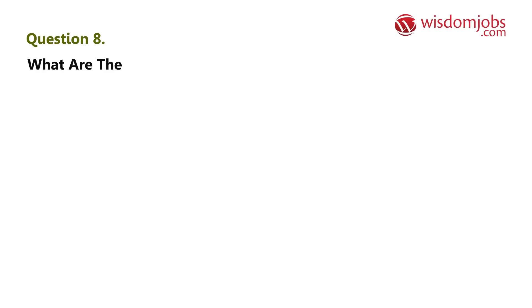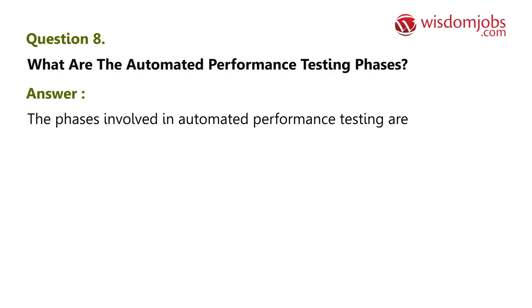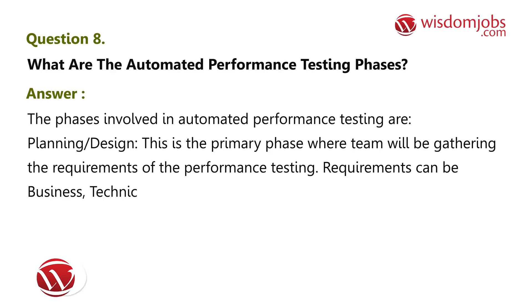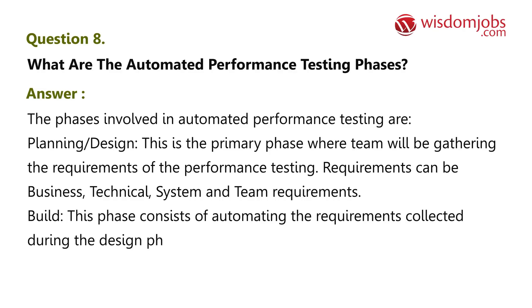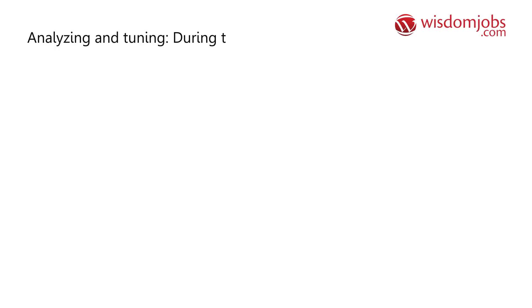Question 8: What are the automated performance testing phases? Answer: The phases involved in automated performance testing are: Planning and Design — the primary phase where the team gathers requirements for performance testing, which can be business, technical, system, and team requirements. Build — this phase consists of automating the requirements collected during the design phase. Execution — done in multiple phases, consisting of various types of testing like baseline and benchmarking.